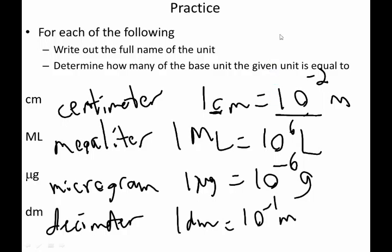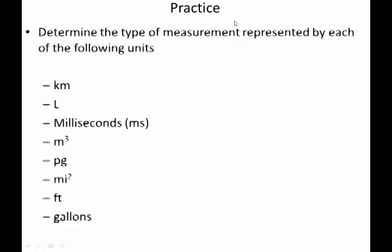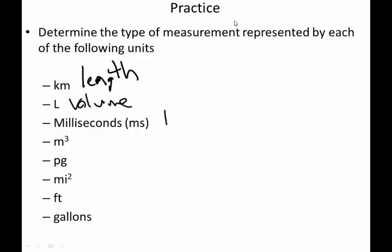We have, I think, one more problem. So, here, I want you to determine what type of measurement, so length, volume, whatever. So, determine what kind of measurement each of these is. So, pause it and try these. Okay. That's the first one. Kilometer. That's definitely a length. You can say distance, too. Length and distance are interchangeable. Liters is volume. Milliseconds is time. Meters cubed. This cube makes it volume. Not length, not distance. Those would be incorrect. It is volume. Picograms. The key here is grams. Grams is a unit of mass. Miles squared makes this an area, not a volume. Distance squared. Feet is a length. And gallons is a volume.